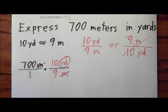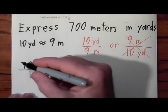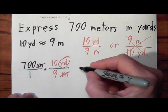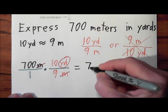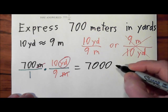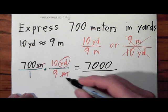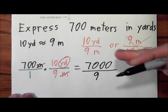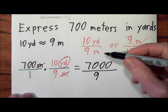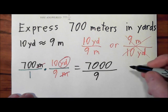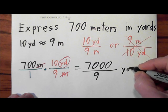Now I just do whatever the math tells me to do. So when I multiply 700 times 10, I get 7,000 over 9. I know I kind of shifted it down a little, but I was running into my numbers there. And the units left are yards.